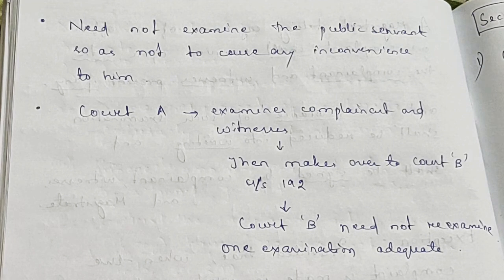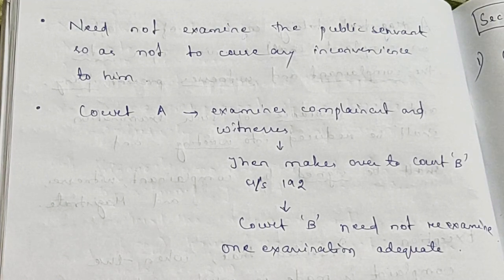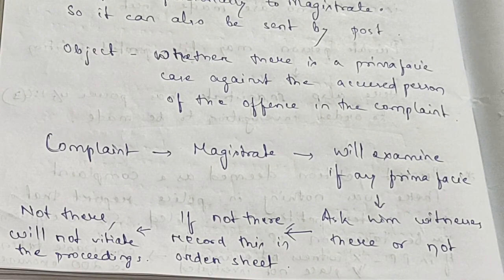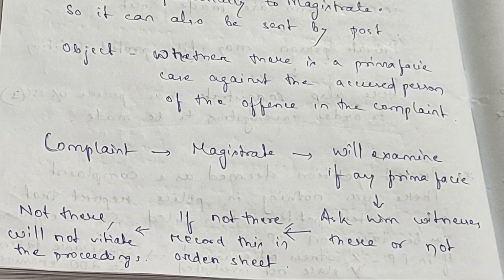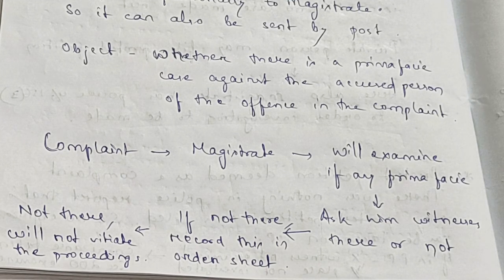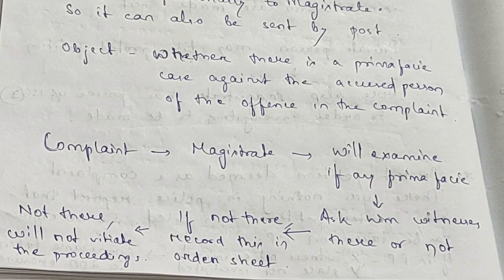For example, suppose Magistrate A examines the complainant and the witnesses, then makes over the case to Magistrate B under Section 192 — then Magistrate B need not re-examine; only one examination is adequate. In short, when a complaint is filed before the magistrate, the magistrate will examine whether any prima facie case is present or not and will ask the complainant to present any witnesses if present. If there are no witnesses present, he will record this in the order sheet and it will not affect the proceedings.